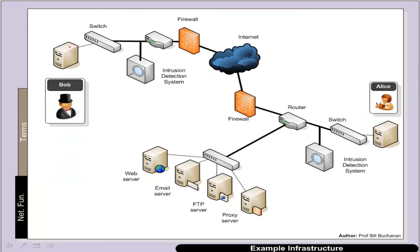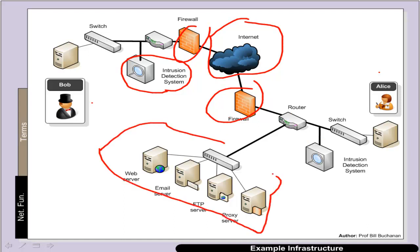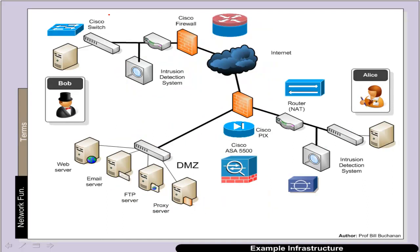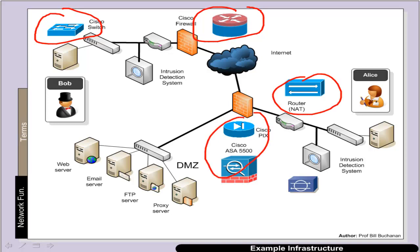An example network might be this. We have Bob and Alice over here. We have firewalls in between. We have a public channel of the internet. We might have some security devices such as intrusion detection systems throughout. We might have some servers each connected to a switch, and we can have routers in between. Some of the icons that we might see as part of the Cisco part: a Cisco switch, a Cisco firewall, a network address translation device, Cisco PIX ASA intrusion detection system.